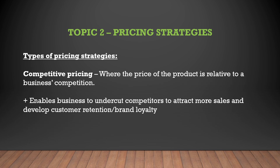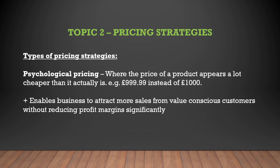Competitive pricing — where the price of the product is relative to a business's competition. The positive: it enables a business to undercut competitors to attract more sales and develop customer attention and brand loyalty. Psychological pricing — where the price of a product appears a lot cheaper than it actually is, for example £990.99 instead of £1,000. The positive: it enables a business to attract more sales from value-conscious customers without reducing profit margins significantly.